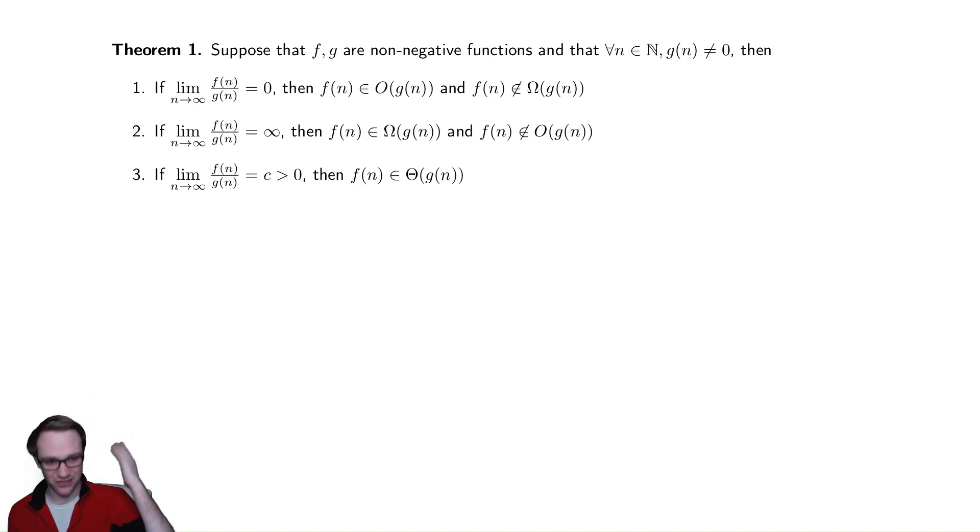And then the third option, we have zero, infinity, and then literally any number, positive number, it turns out, which should always work because we assume these functions are non-negative. Any non-zero positive number says that they're in theta of each other, that they grow at the same rate, and that the only real difference is some constant out front.